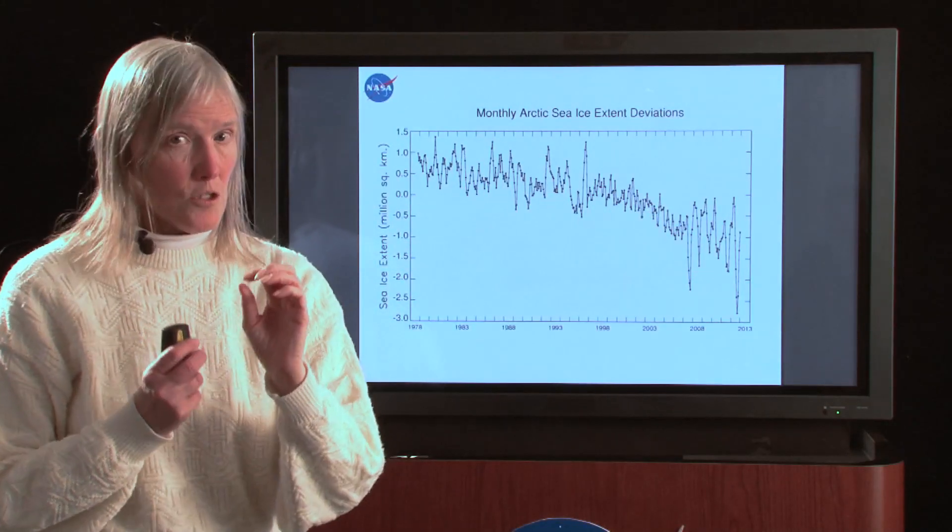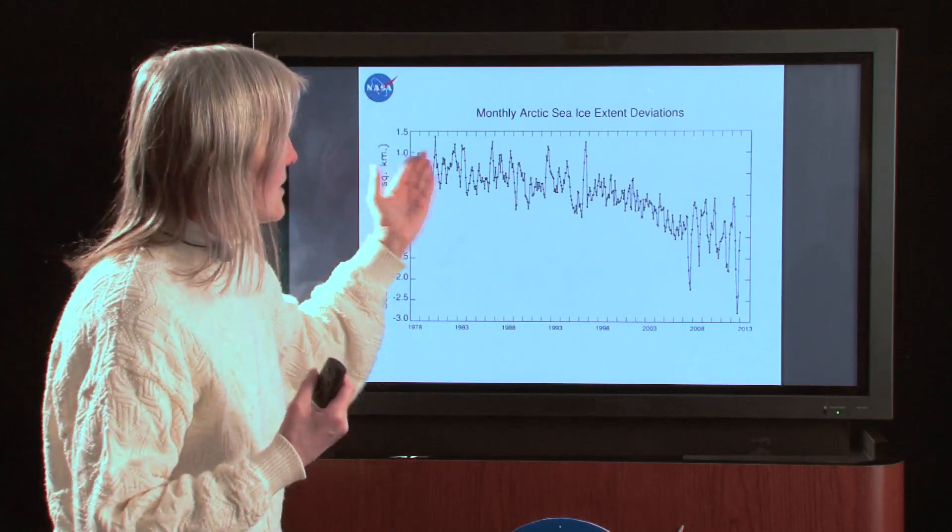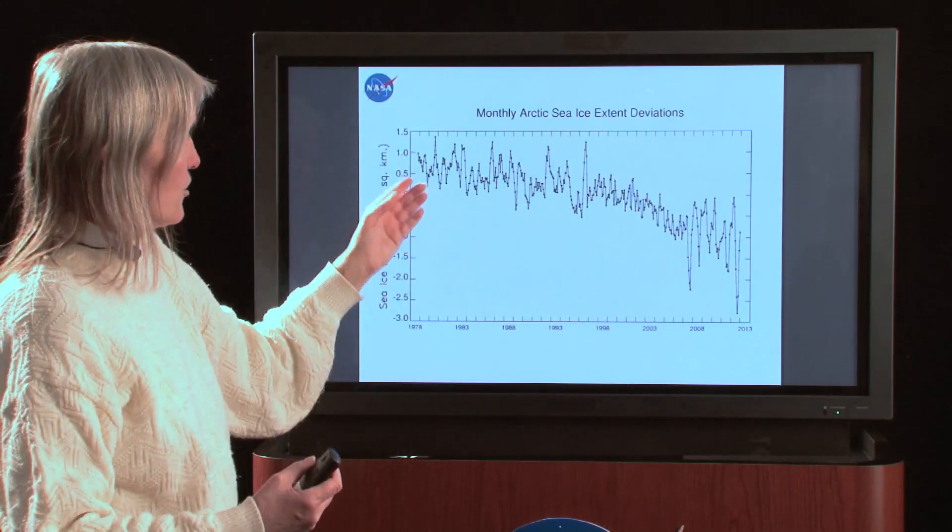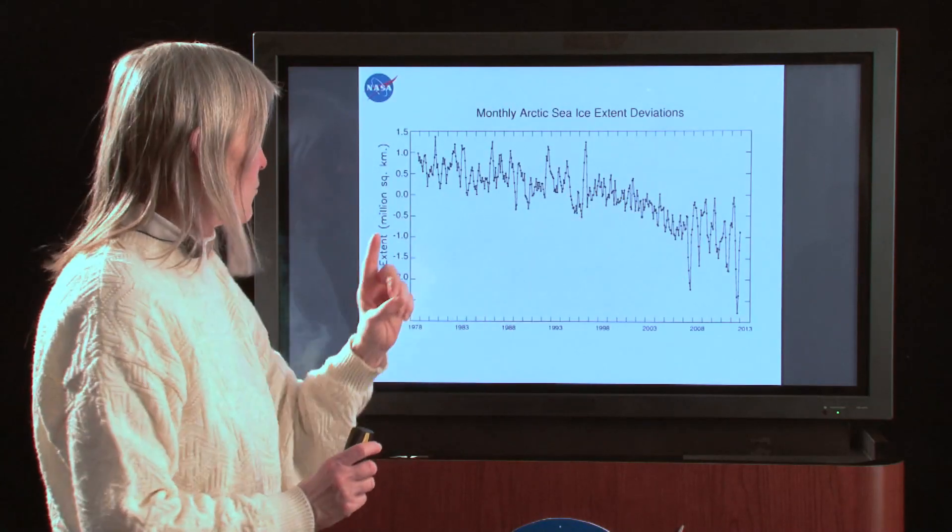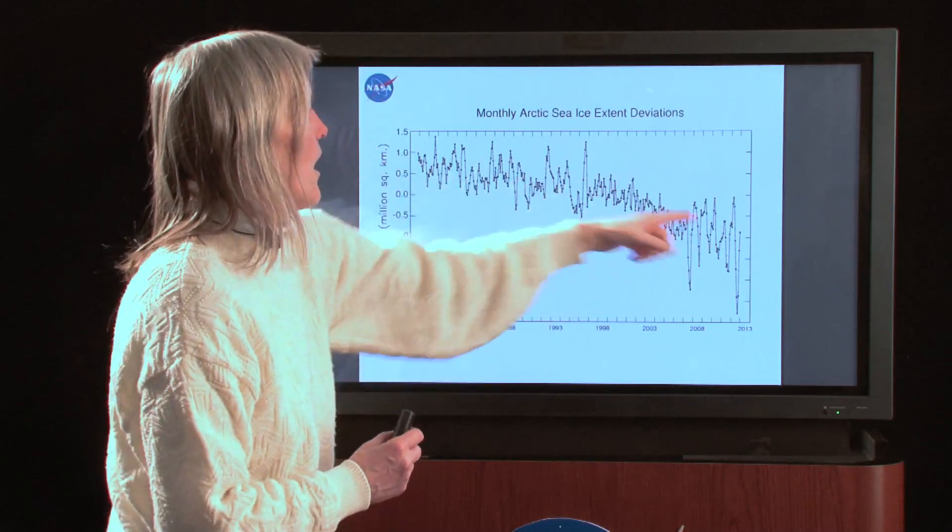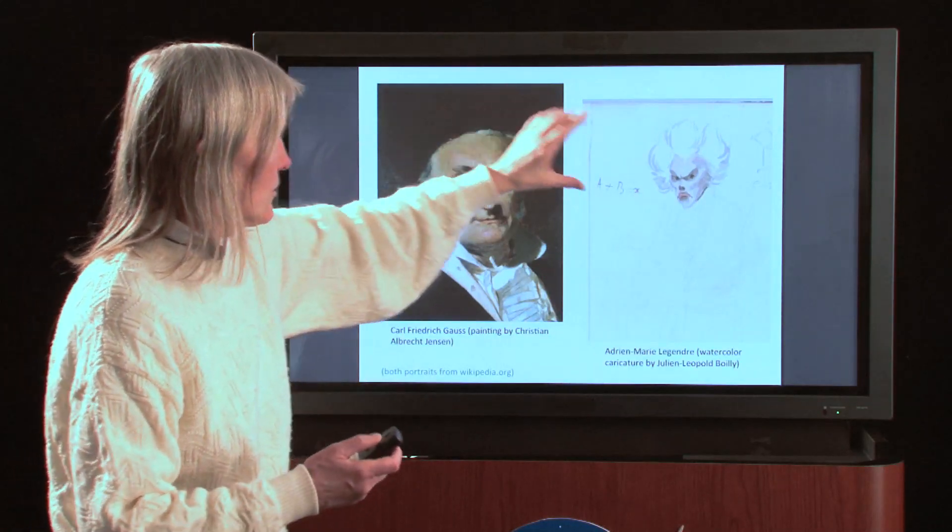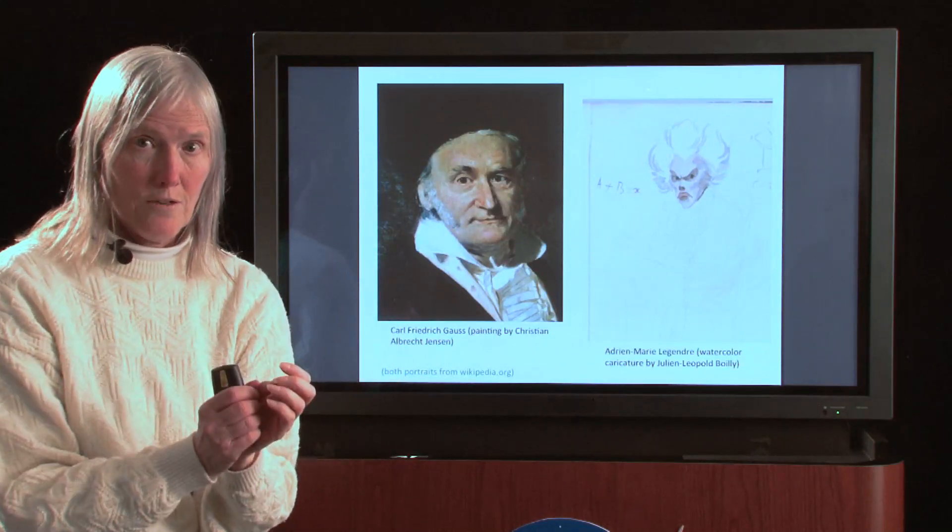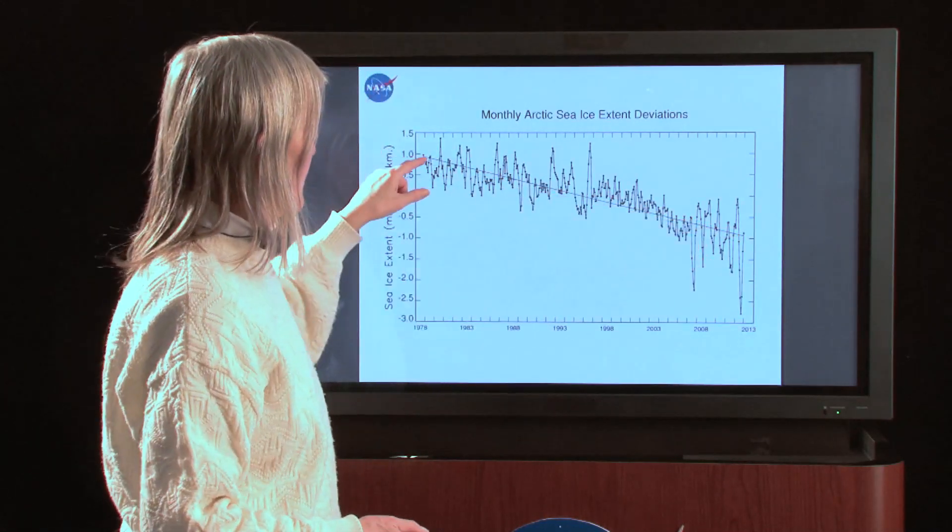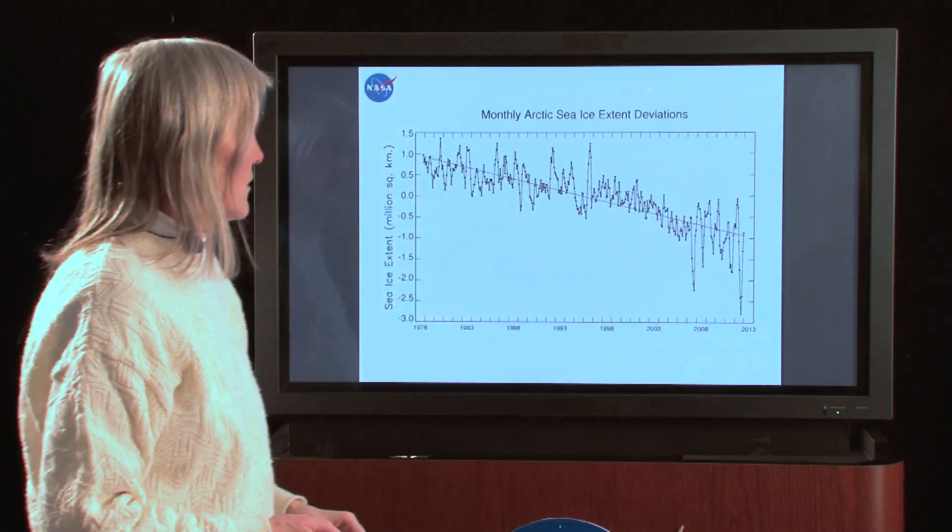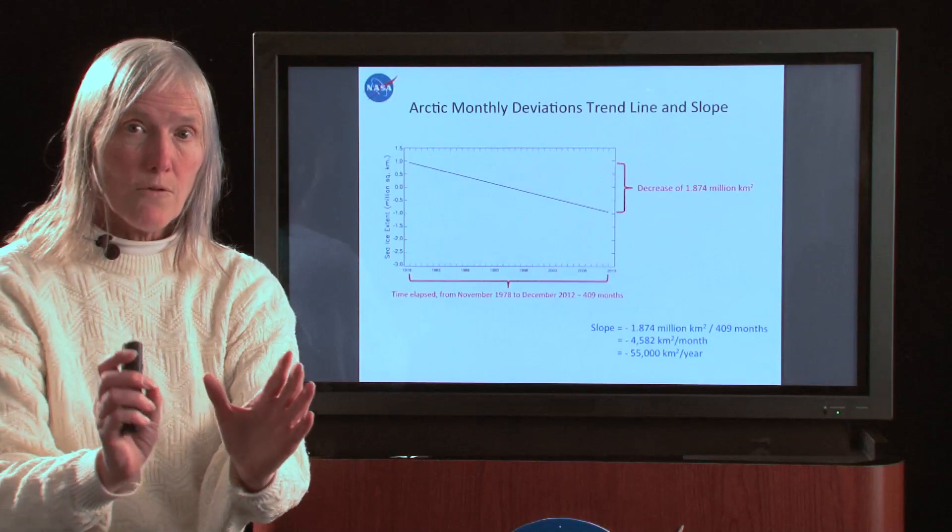Now we've got the same issue that we had in the second video, which is we still would like to get a number out to say how the Arctic sea ice cover has changed. We can see it's decreased. And we've got a lot more detail now about that decrease than in the yearly averages, which had only one point for each year. But we still would like to get a number. And so we're going to use the same method, same method developed by Gauss and Legendre, the same method of least squares. So we're using the least squares method to get a line through those data points. And this is the least squares line through the monthly sea ice extent deviations.